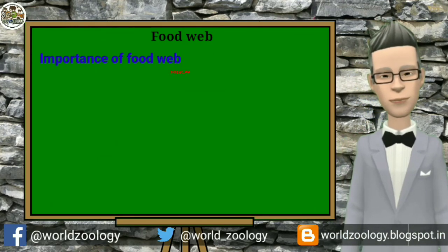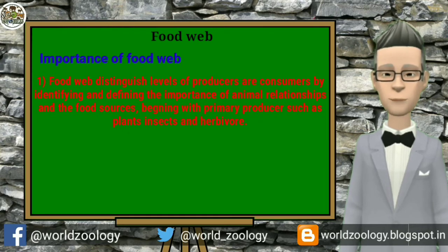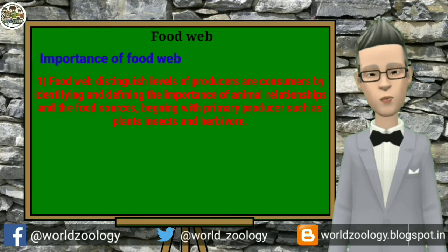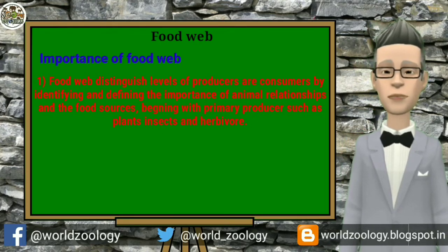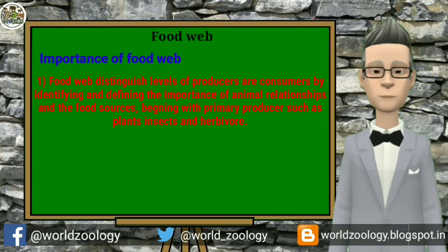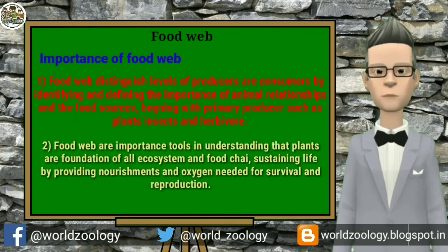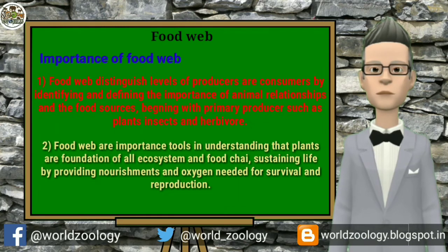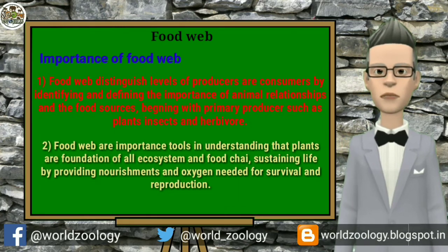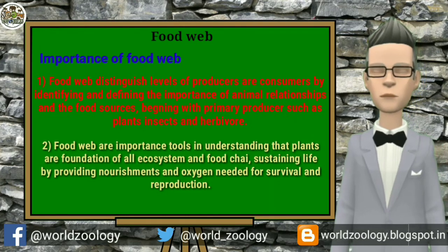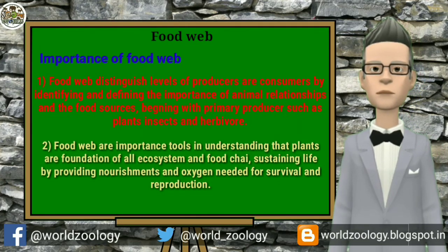The importance of food web: first, a food web distinguishes producers and consumers by identifying and defining the importance of animal relationships and food sources, beginning with primary producers such as plants, insects and herbivores. Food webs are important tools in understanding that plants are the foundation of all ecosystems and food chains, sustaining life by providing nourishment and oxygen needed for survival and reproduction. The food web also provides stability to the ecosystem.